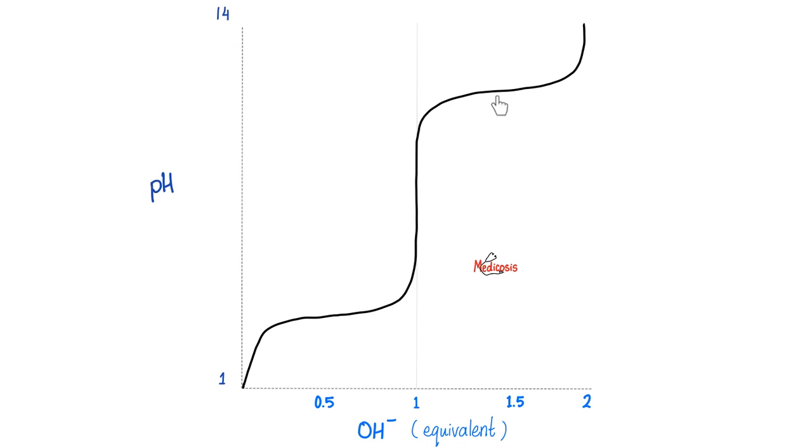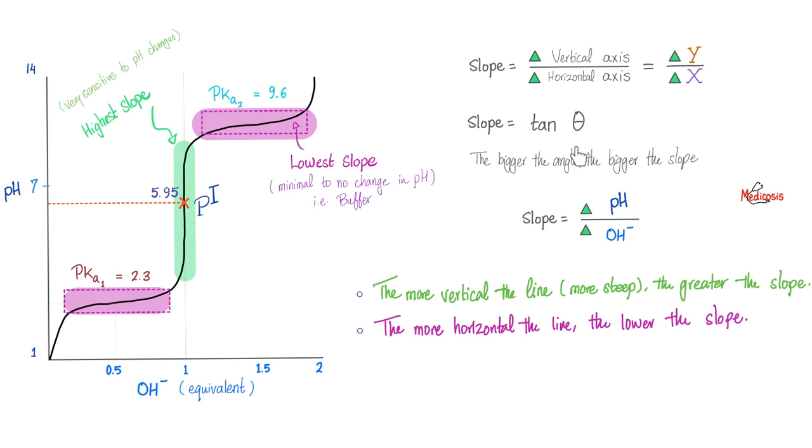In the last video, we talked about the titration of the amino acids and the slope and the tan theta, the pH, the OH, pKa1, pKa2, the PI. It was such an epic video. Today, we'll talk about peptides, dipeptides, oligopeptides, polypeptides, the peptide bonds.